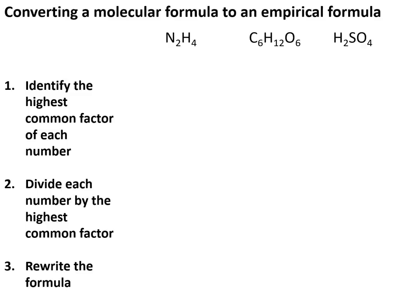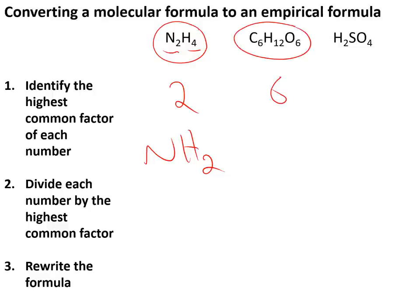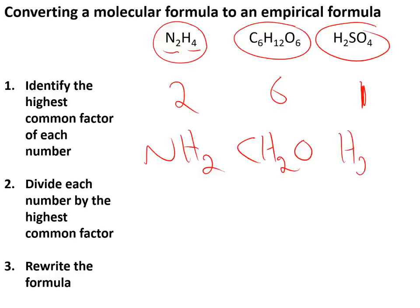An empirical formula is a molecular formula expressed as a ratio in its lowest terms. Find the highest common factor of the numbers in the formula. For N2H4 the highest common factor is 2, giving an empirical formula of NH2. For C6H12O6 the highest common factor is 6, giving CH2O. If the highest common factor is 1, the empirical formula is the same as the molecular formula — for example H2SO4 stays as H2SO4.